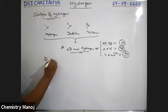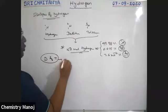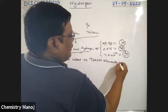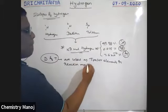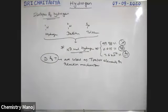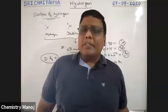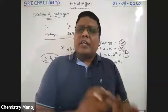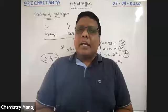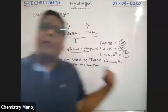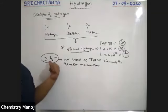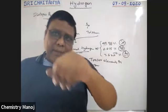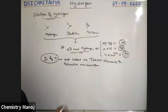Deuterium and tritium are used as tracer elements in reaction mechanisms. A reaction mechanism is the step-by-step explanation of a reaction. These isotopes are very helpful atoms for tracing out reaction mechanisms. At the time of organic chemistry, we will explain the tracer conditions in detail.